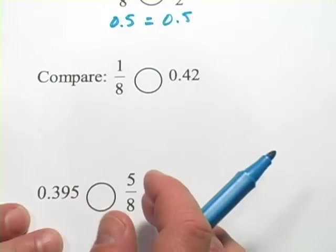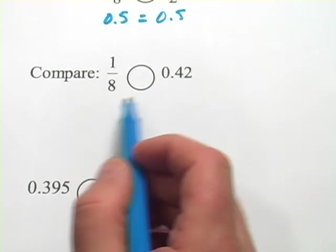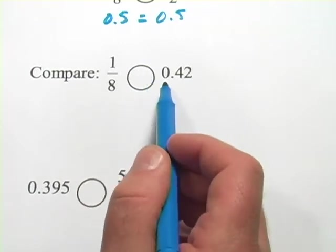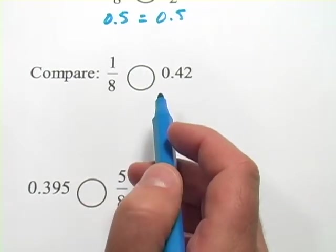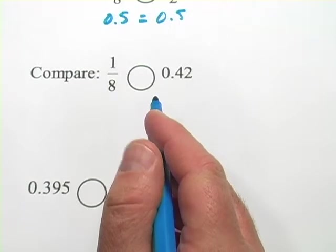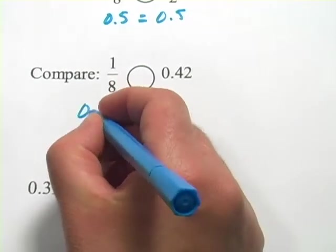All right, let's try this with the next one. We have one eighth and how does that compare to 0.42? So on your calculator, you can type in one divided by eight and what you get is 0.125.